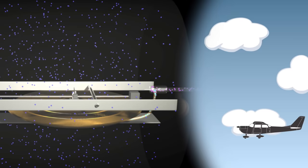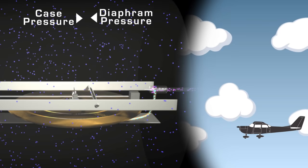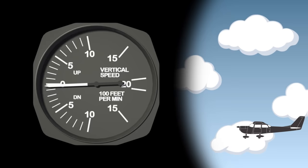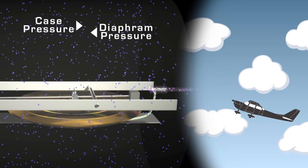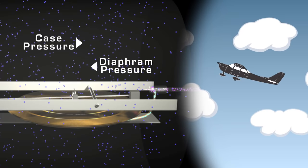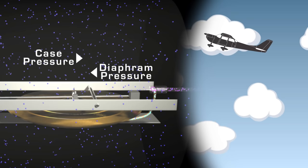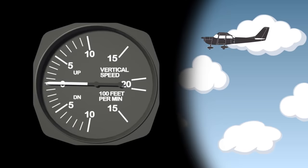Say you have a Cessna flying at 3,000 feet. The air pressure in the diaphragm and the case are the same, so the VSI is reading 0 feet per minute. If the Cessna starts to climb, the air pressure in the diaphragm is decreasing, but the case pressure is decreasing more slowly. This results in the case having a higher air pressure than in the diaphragm. This higher air pressure will squeeze the diaphragm and make the VSI read a climb. Once the aircraft levels off again, the case pressure will finally equalize with the diaphragm, and then the VSI will show zero again.